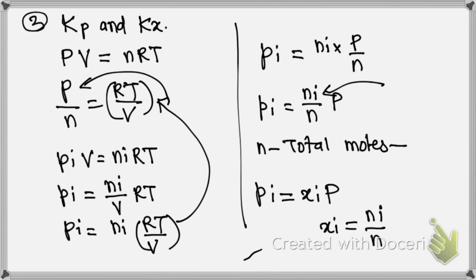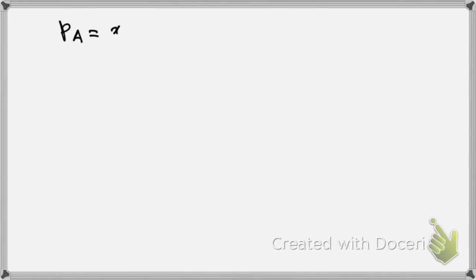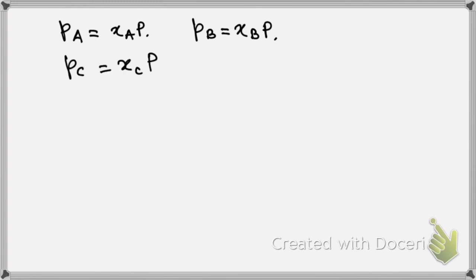Using this relationship, we can find the pressure of reactants A, B and products C, D. Therefore: PA equals XA into P, PB equals XB into P, PC equals XC into P, and PD equals XD into P.